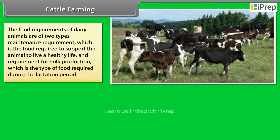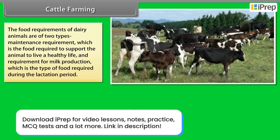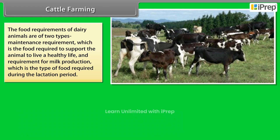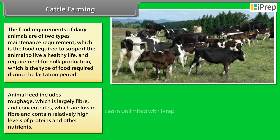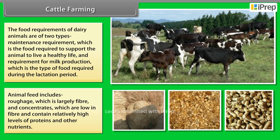The food requirements of dairy animals are of two types: maintenance requirement, which is the food required to support the animal to live a healthy life, and requirement for milk production, which is the type of food required during the lactation period. Animal feed includes roughage, which is largely fiber, and concentrates, which are low in fiber and contain relatively high levels of proteins and other nutrients.